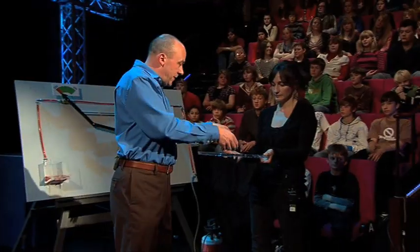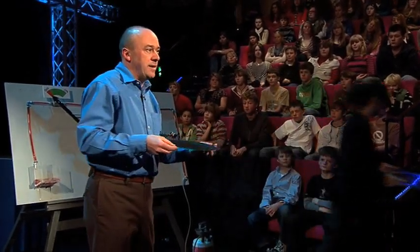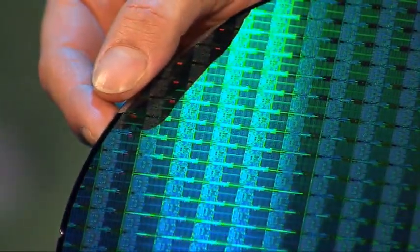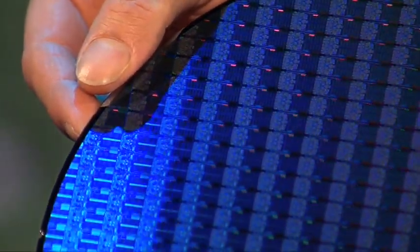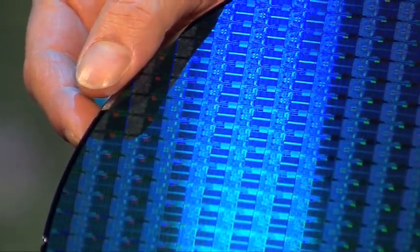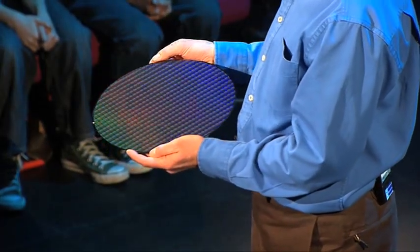The microprocessors are manufactured on the surface of a thin wafer of silicon and I have one of them here. I hope you can see this. Each of those little squares is a single microprocessor of the kind that we saw earlier. Now to me it seems incredible that something which is so tiny and so complex can be made at all. It sounds almost impossible.